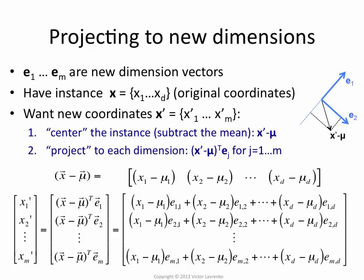Voila, you're done. You started with a high-dimensional vector x1 through xd, and you ended up with a low-dimensional one x1 prime through xm prime.